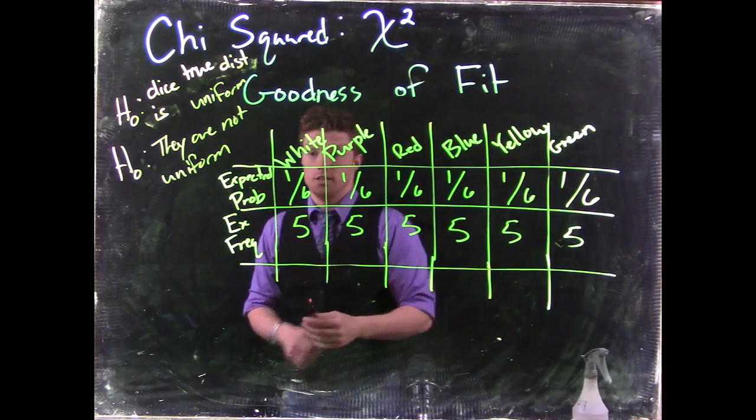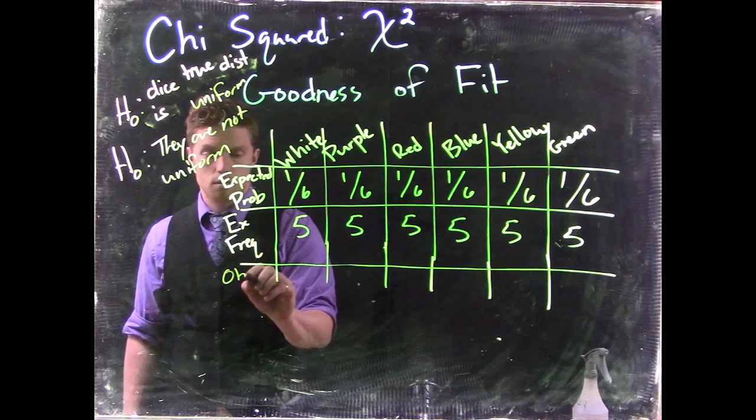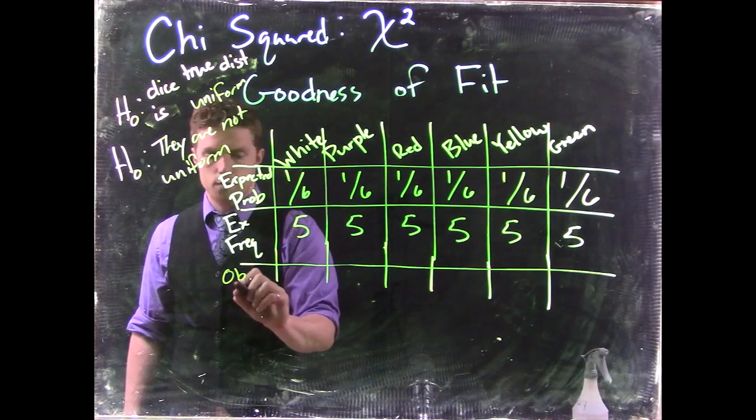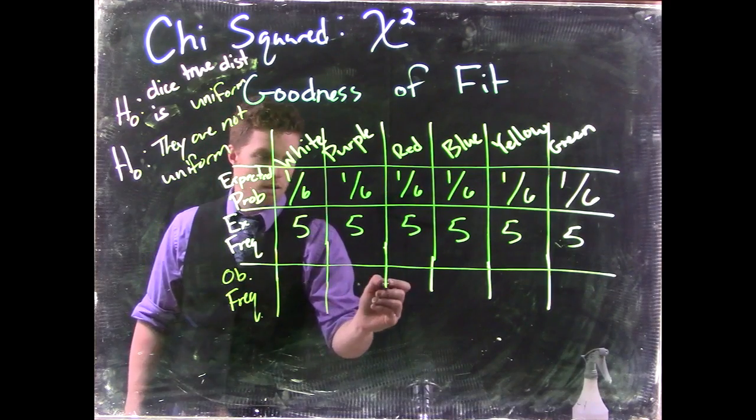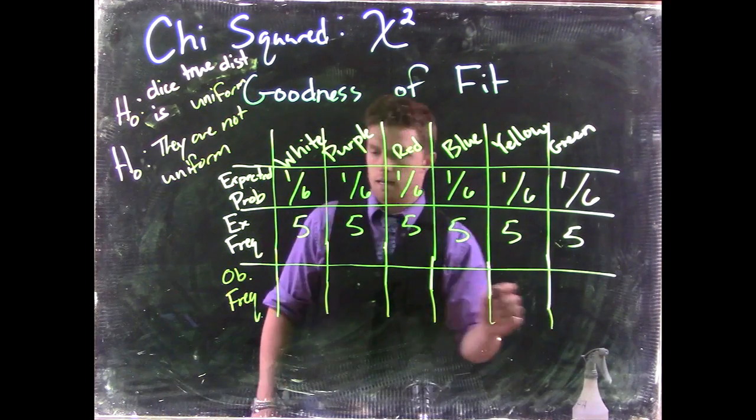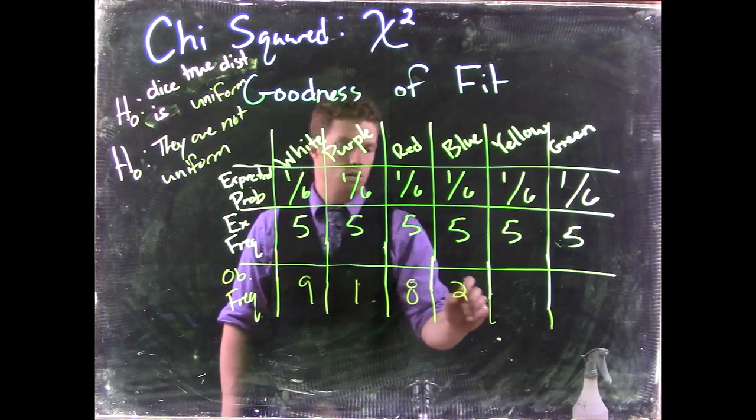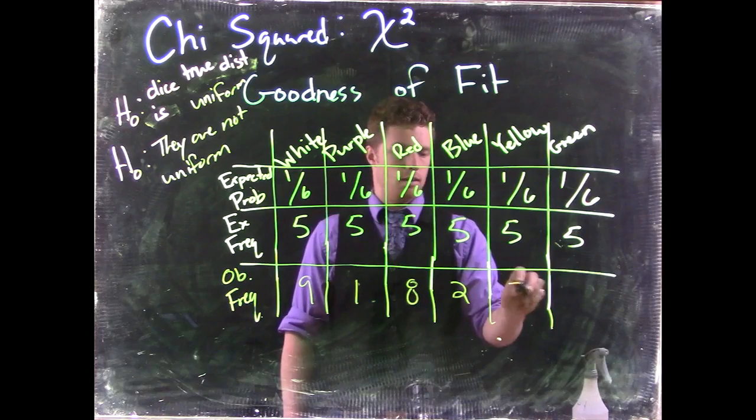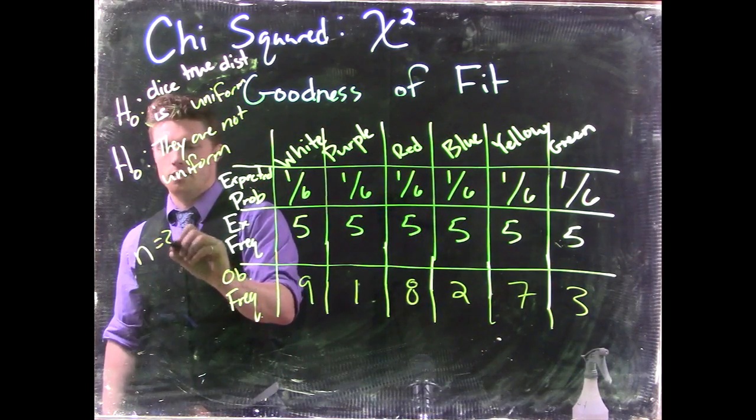So let's suppose we go out and we actually roll this dice. Then we would have our observed frequencies, and let's say that we got 9, 1, 8, 2, 7, 3. This is still of our sample size of n equals 30.